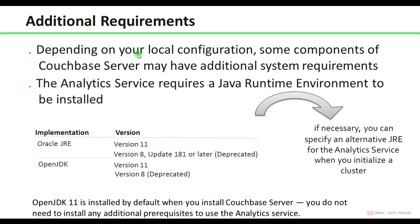Additional requirements: depending on your local configuration, some components of Couchbase Server may have additional system requirements. For example, if you want to use the Analytics service, it requires Java runtime to be installed. OpenJDK 11 is installed by default when you install Couchbase Server, so you do not need to install any additional prerequisites.